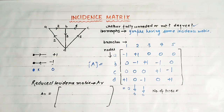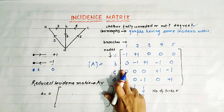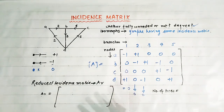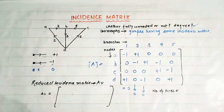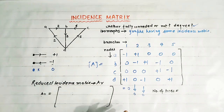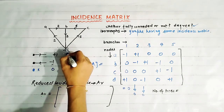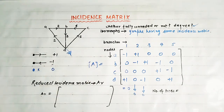Now, what is the reduced incidence matrix? If we eliminate a row from this matrix, the remaining matrix is called the reduced incidence matrix. We take one node as a reference node, then delete the row corresponding to that reference node.